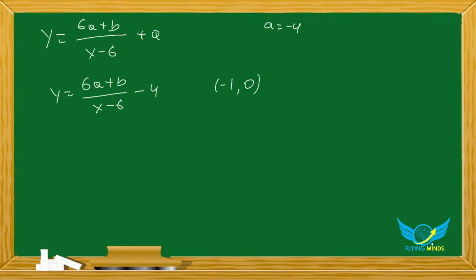We know a equals negative 4, so let's solve the equation. We have 0 equals 6 times negative 4 plus b over negative 1 minus 6 minus 4.